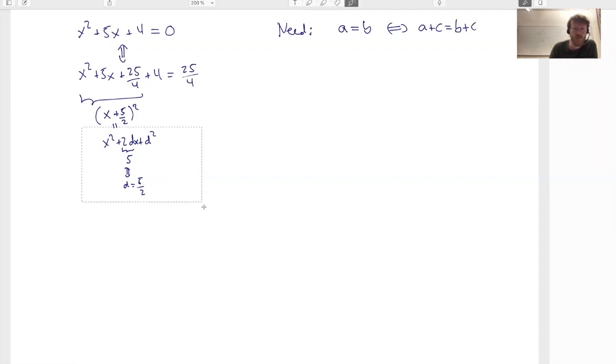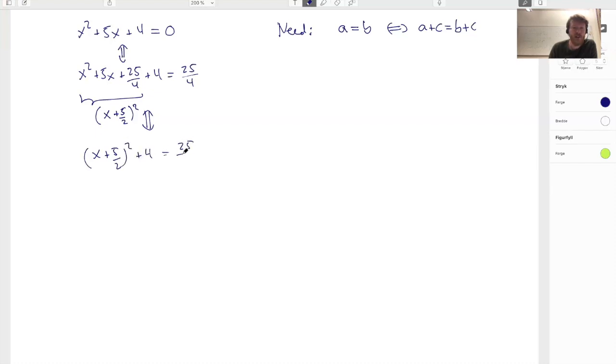So let's remove this thing. So what does this give me? Well, this gives me now x plus 5 halves to the square plus 4 is equal to 25 divided by 4.